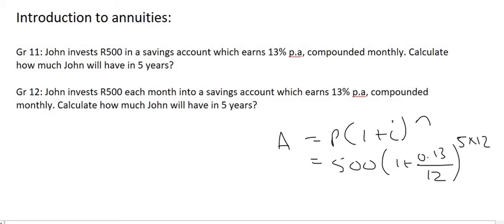You see the difference is that now John will be paying 500 Rand every single month. He's not going to just make a once off payment and let it grow. He's going to make multiple payments.